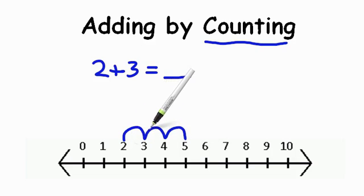So we've counted 1 hop, 2 hops, or 3 hops, and we got 5 as an answer. Now another way you can do that is if you know that you have 3 of something that you're adding, you can start out by taking that 2 and counting up 3 more.